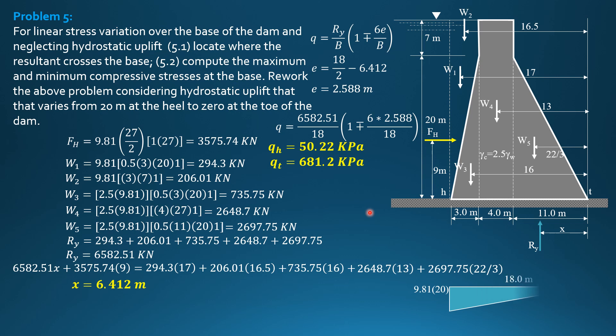Then, second, considering uplift, which varies from 20 meters at the heel, 20 meters only, not full, to 0 at the toe. So this is the uplift pressure diagram. So the pressure here is specific weight of water times 20, 18 meters. So the uplift force is 0.5 of 18 times 9.81 times 20 times 1. So the uplift force is equal to 1765.8 kilonewtons.